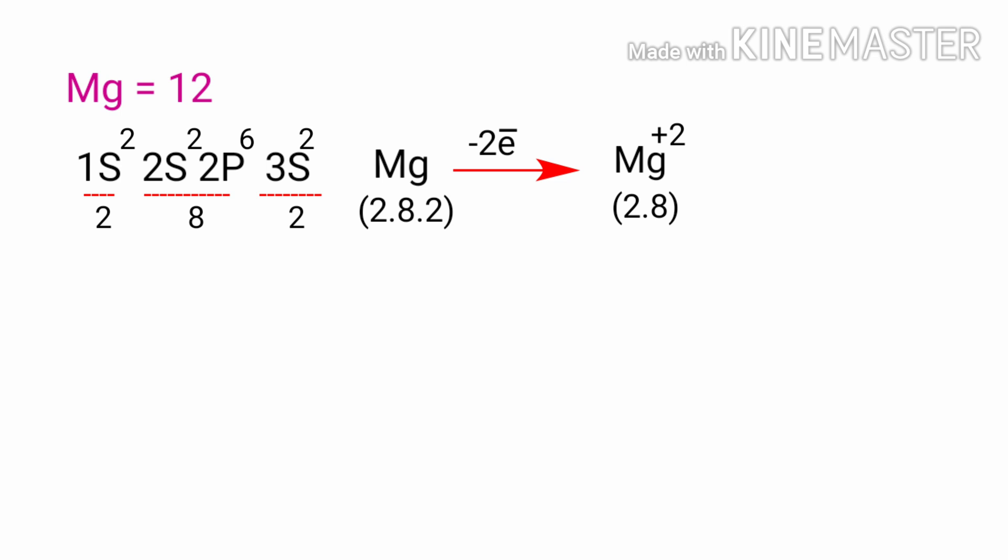It takes less energy for magnesium to donate those two electrons than it does to accept six more electrons to fill the outer shell.